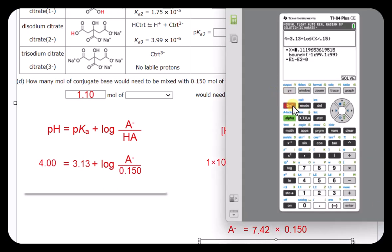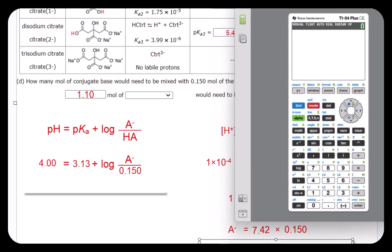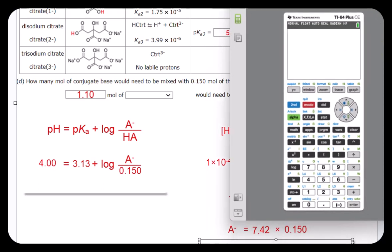I'm going to leave this and quit. And I'll do this calculation. I'll take 7.42 times the 0.15, which is our acid moles. Let's see if we get 1.11.